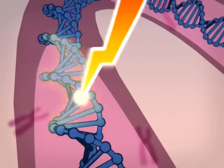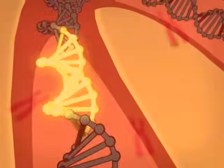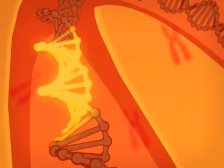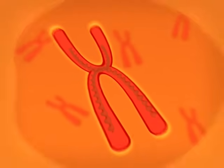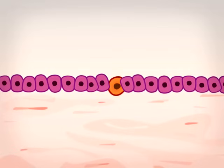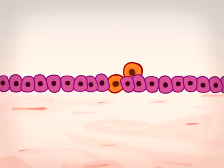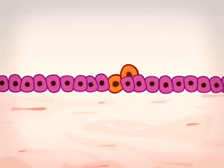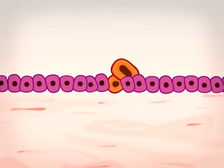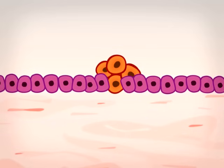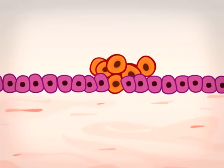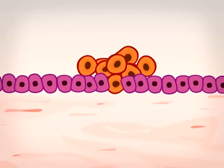Sometimes, some of these genes undergo a change. The nucleus then sends out abnormal orders and the cell goes wrong. It multiplies uncontrollably and takes on a life of its own. Each new cell produced contains the same defect. The cells proliferate chaotically and form a tumor.